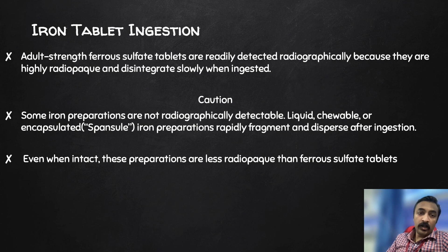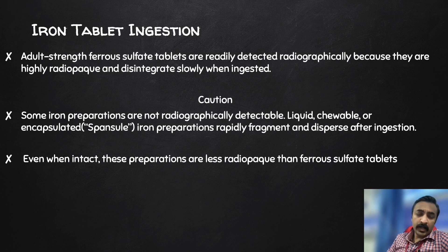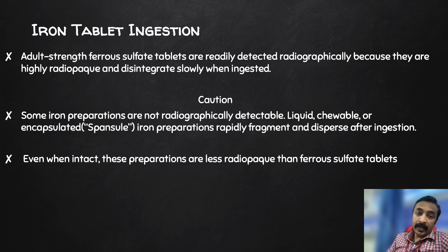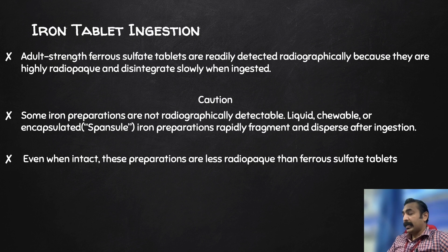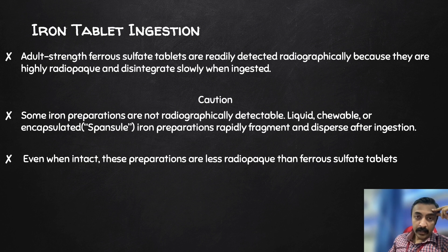This is an X-ray of a person who has consumed iron tablets. Adult-strength ferrous tablets are readily detected radiographically because they are highly radiopaque and disintegrate slowly when ingested. However, some iron preparations are not radiographically detectable — liquid, chewable, or encapsulated iron preparations rapidly fragment and disperse after ingestion. Even when intact, these preparations are less radiopaque than ferrous sulphate tablets. So X-ray can assist in diagnosing iron overdose, but a negative X-ray does not always rule it out.